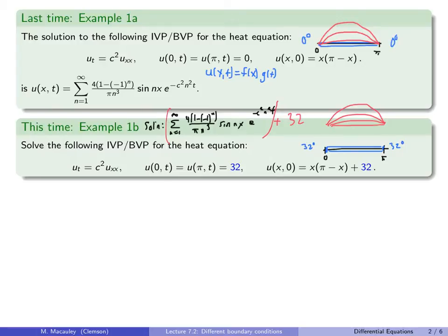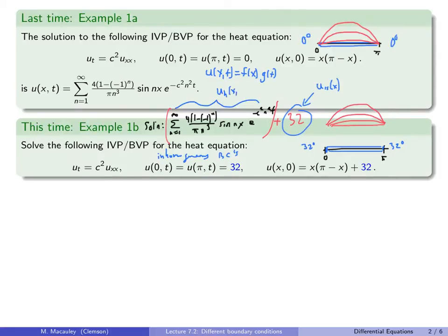These boundary conditions are called inhomogeneous boundary conditions. You can think of the constant 32 as the steady-state solution — that's where the temperature of the bar equals the temperature of the room. This is the particular solution, and the series part is the homogeneous solution, where the boundary conditions are homogeneous. We don't need to redo the whole process; we just shift up our solution by 32.